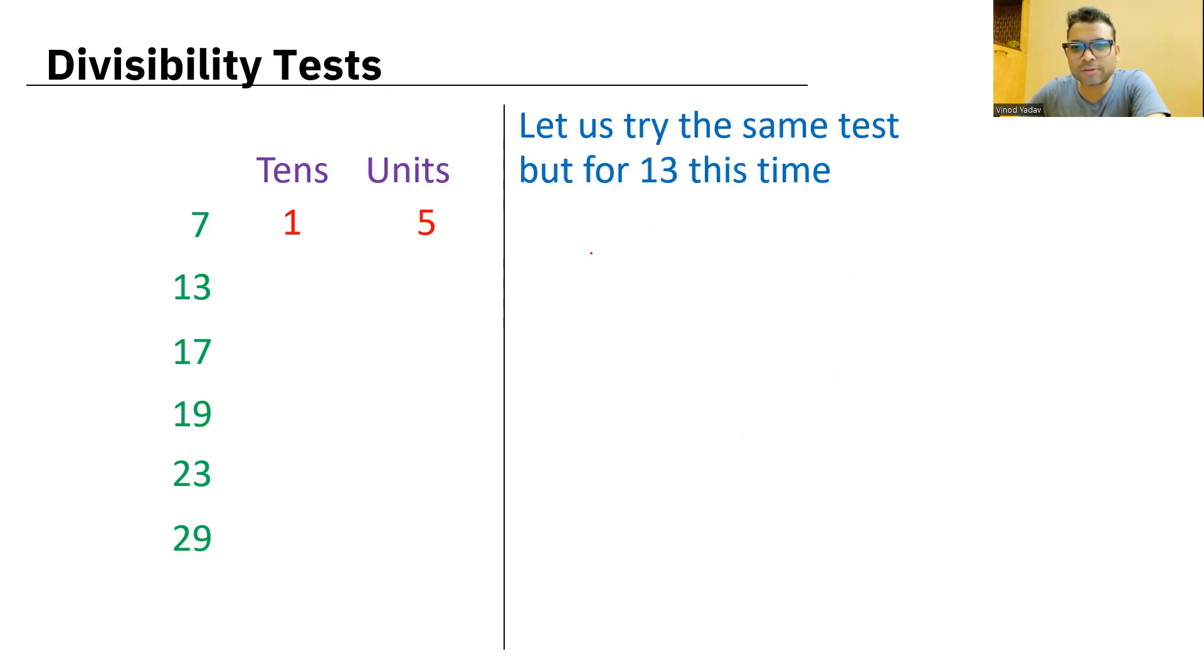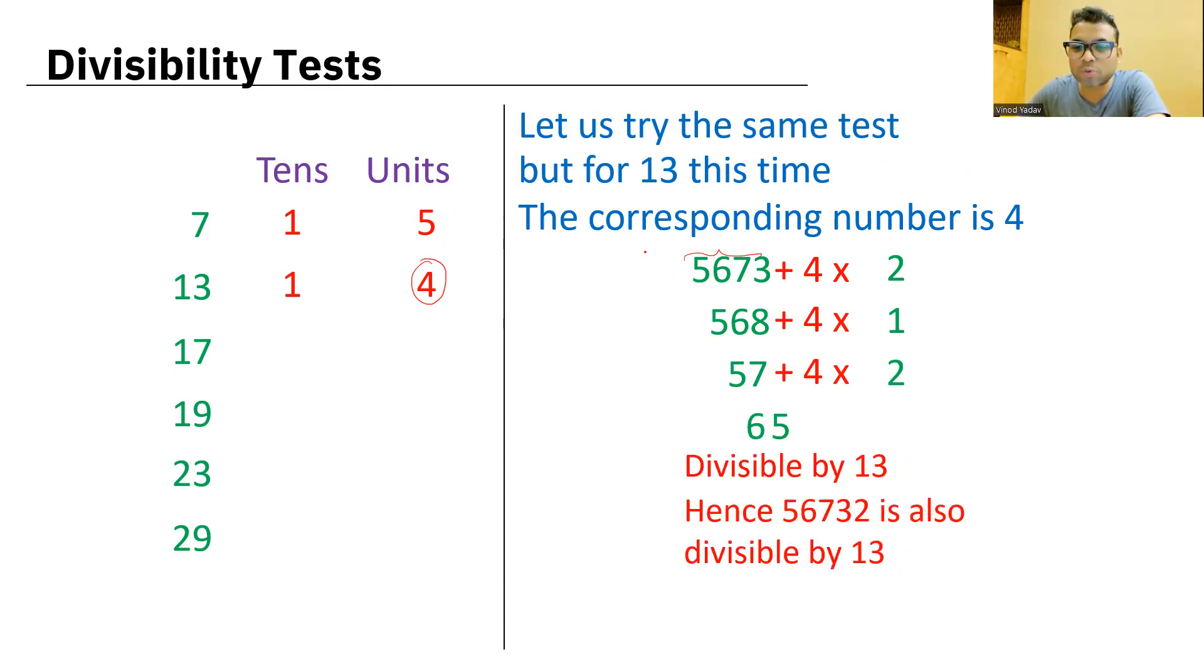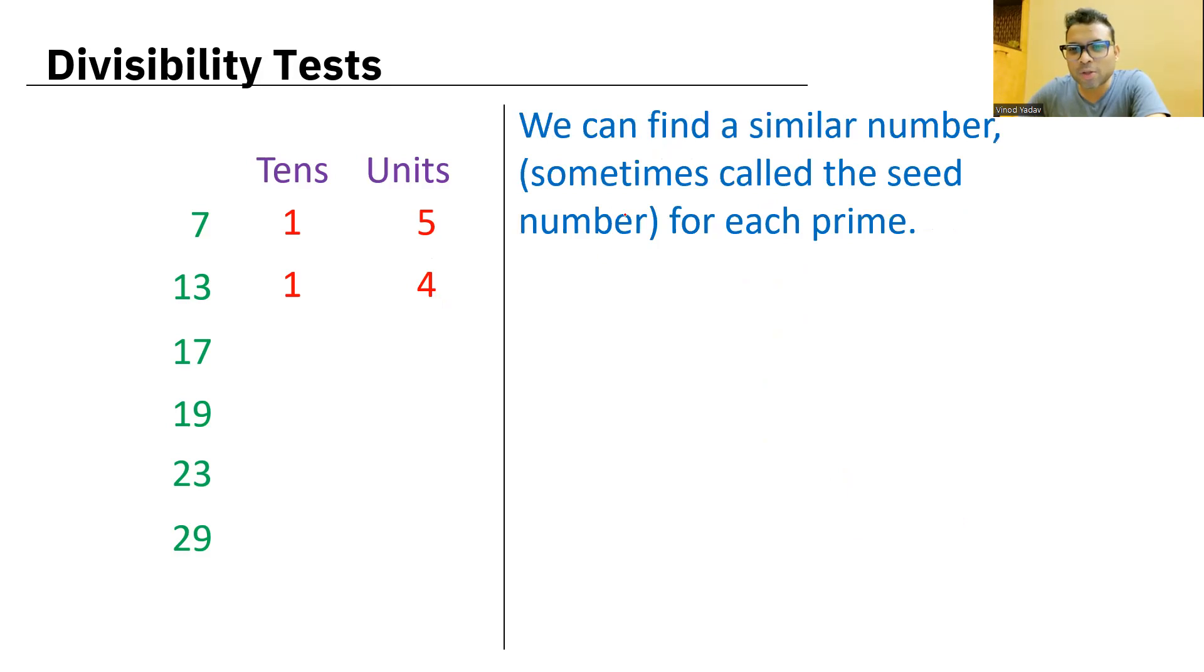Now for 13, this time that seed number is 4 instead of 5. So we'll split this 2 into 4, add it to this. So you get 5681. Again, split units place into 4, added to the remaining part. Again, 2 into 4 added to the remaining part, 65. Now 65 is divisible by 13. The bigger number is also divisible by 13. This way. So you can find a similar number for the seed number for each prime.